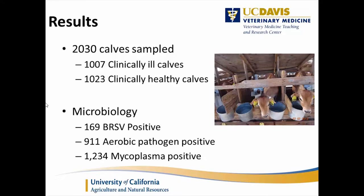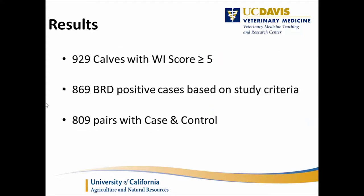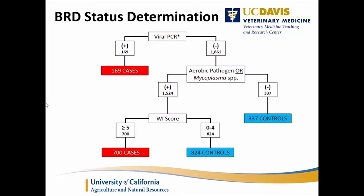We selected 929 calves with a Wisconsin score greater than or equal to 5 out of the 2,030. In the analysis, we used 869 — 809 pairs of cases and controls — and they had to be paired by time and day of enrollment.